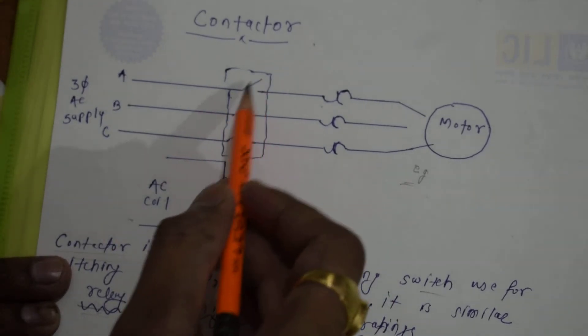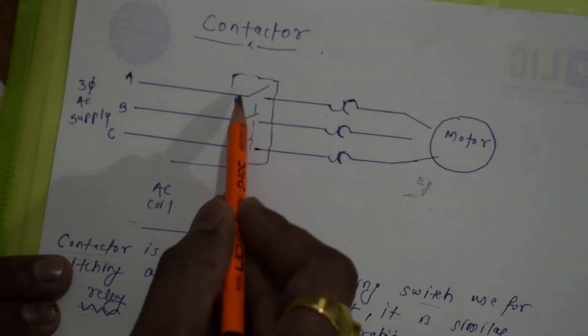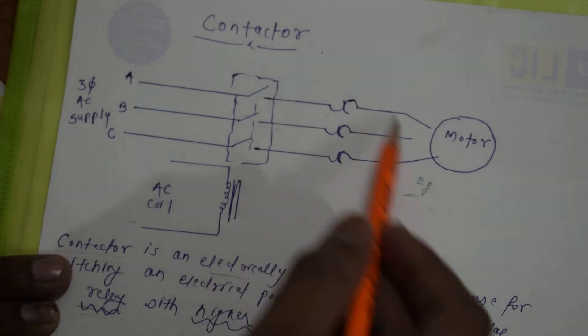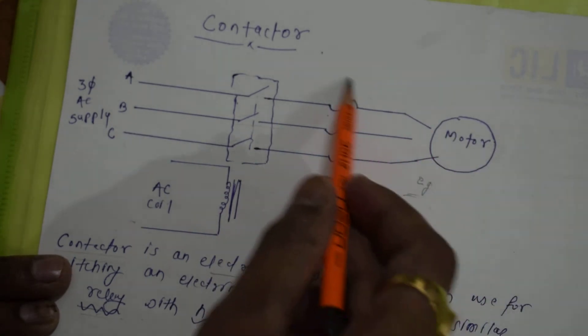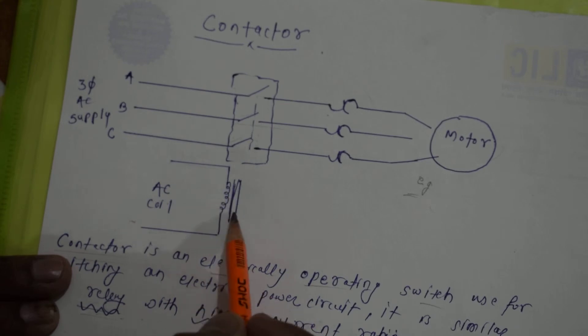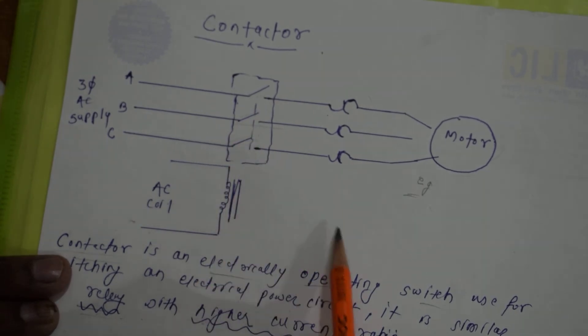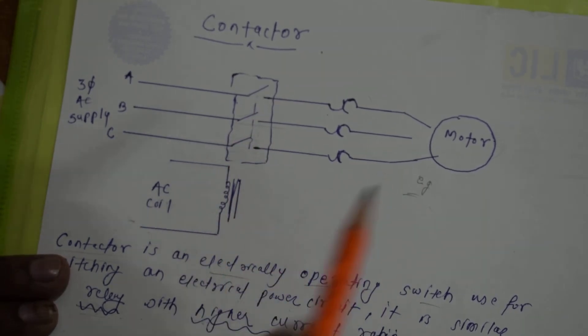This diagram shows the switching points, and by that it will complete the circuit and the motor can get supply. This is a circuit breaker. When the coil is de-energized, this will hit up and the circuit will disconnect. So this is the principle of contactor.